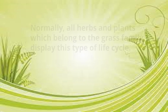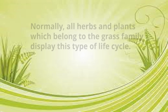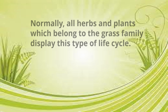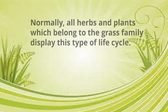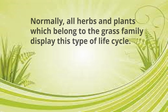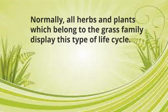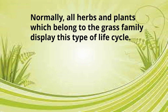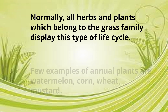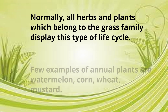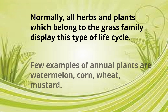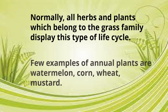Normally, all herbs and plants which belong to the grass family display this type of life cycle. Few examples of annual plants are watermelon, corn, wheat, and mustard.